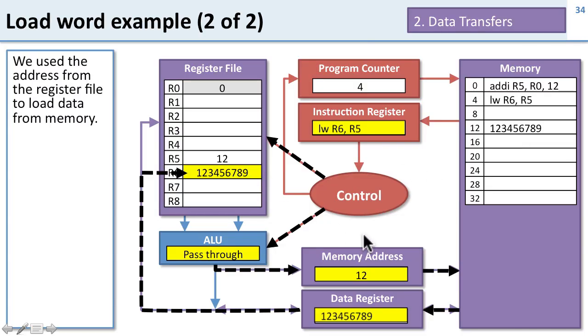The important thing to note here is that we used the address from the register file. We had to have address 12 in the register file so that we could know where we wanted to access in memory.